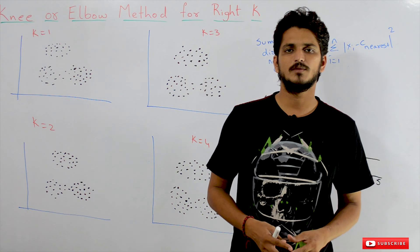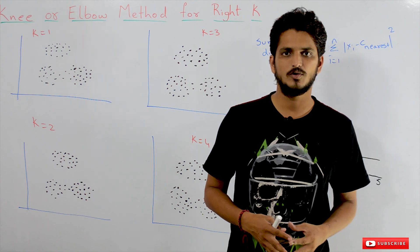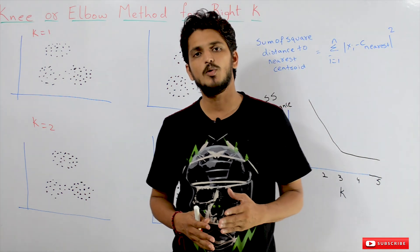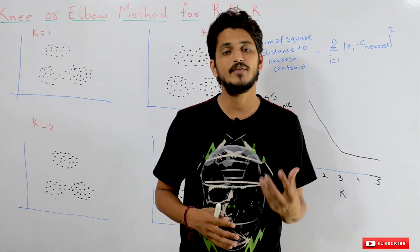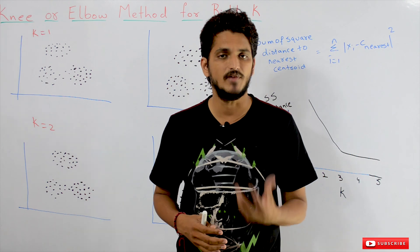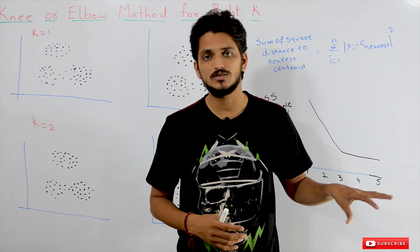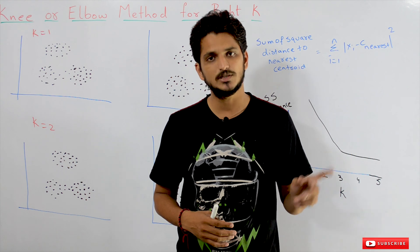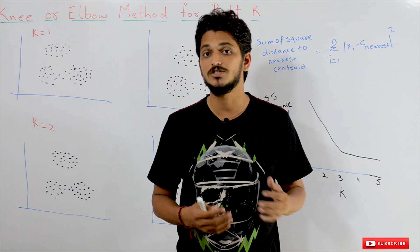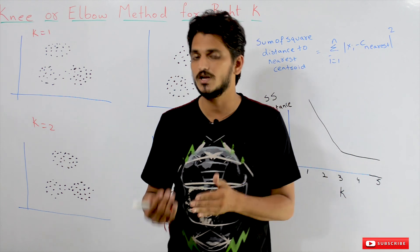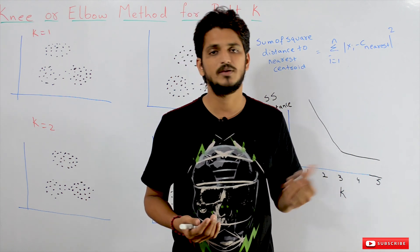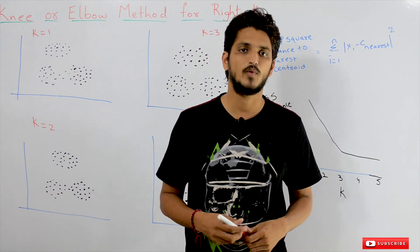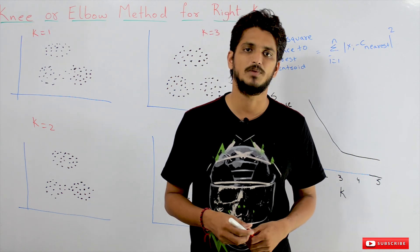Hi, welcome to Learning Monkey. I am Raghu here. In this class we will discuss about the knee or elbow method for identifying the best K value. In our previous classes we discussed about K-means clustering and K-means plus plus. This is a continuation class, so please watch our previous classes and come back here. The link for the playlist is provided in the description below.